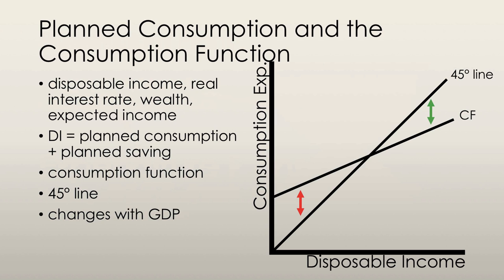Influences on consumption include changes in disposable income, real interest rate, wealth, and expected income. If any of those increase or decrease, we can see a change in consumption. Disposable income is equal to aggregate income or real GDP minus taxes, plus transfer payments. So that's the amount of income that consumers actually have to themselves to spend on whatever they want.